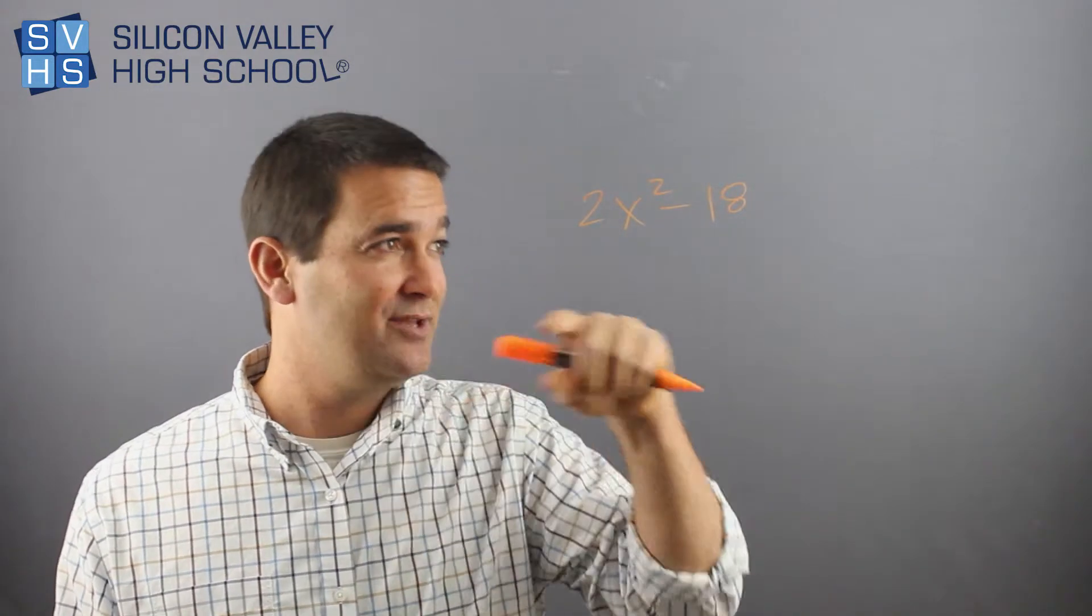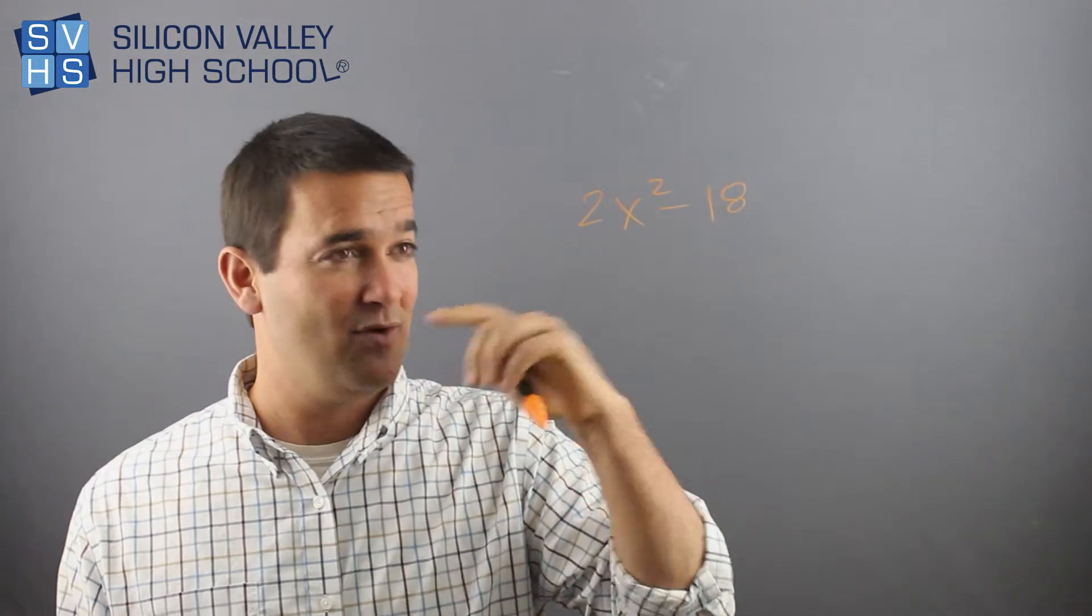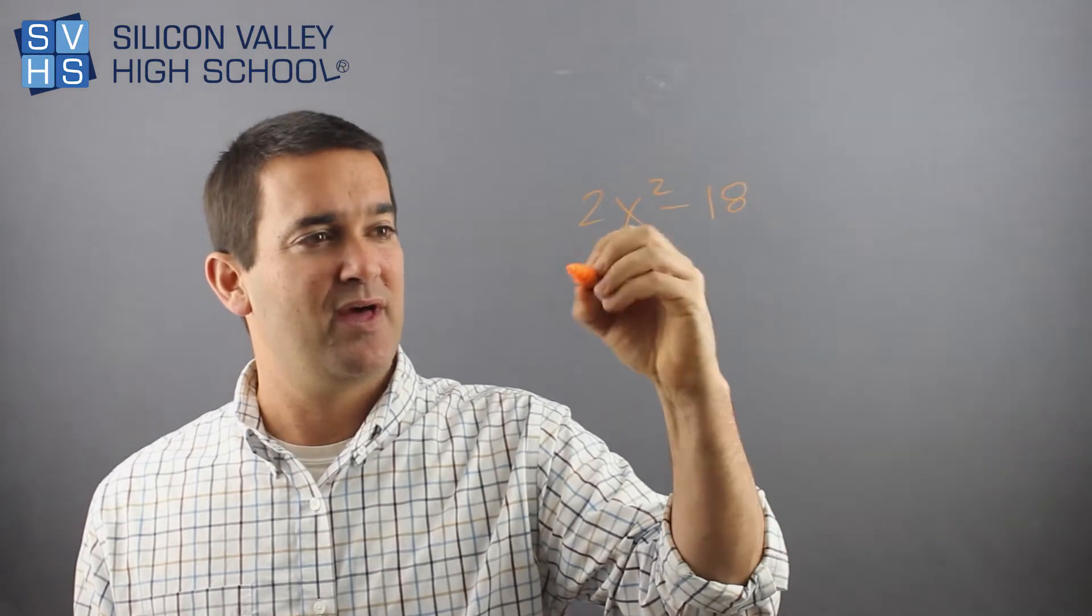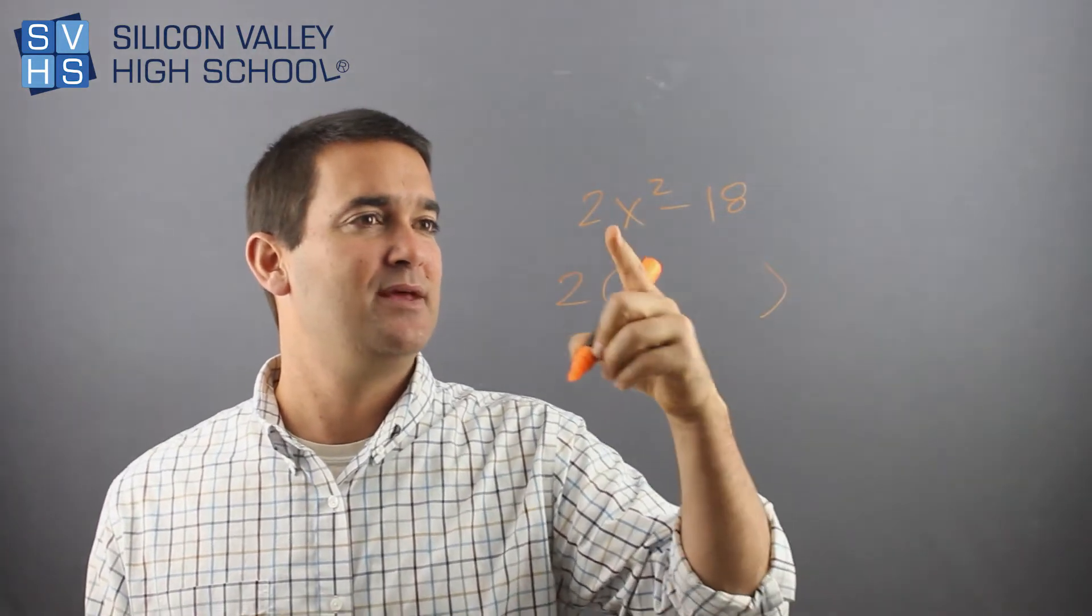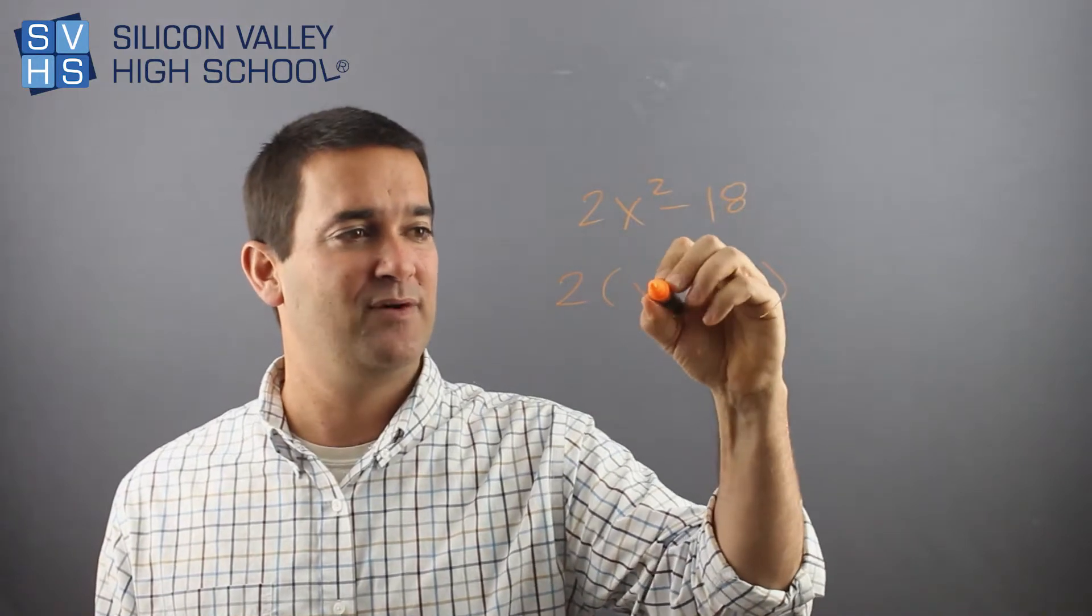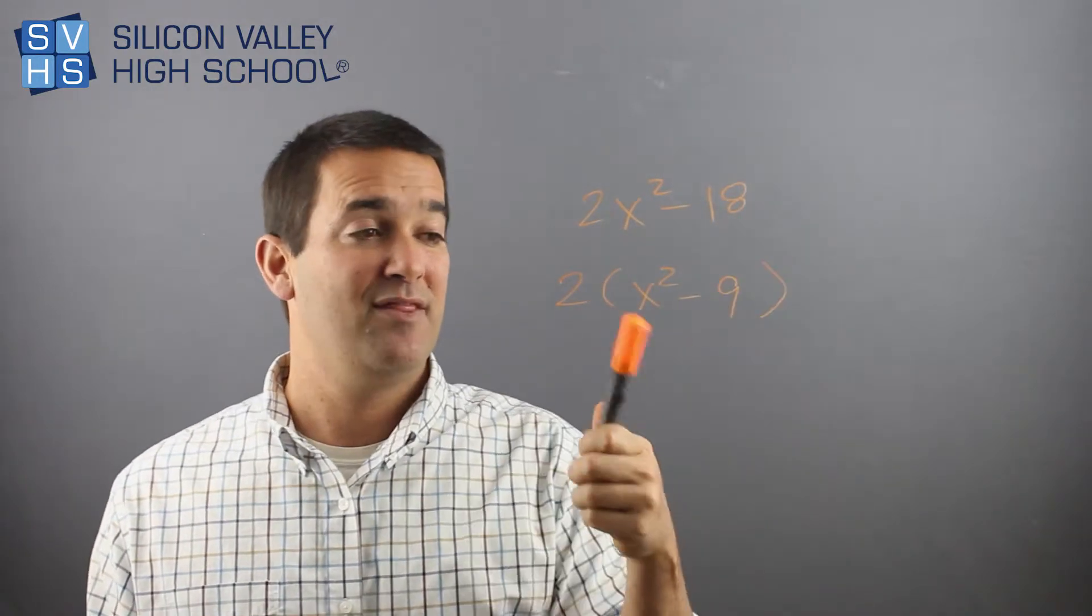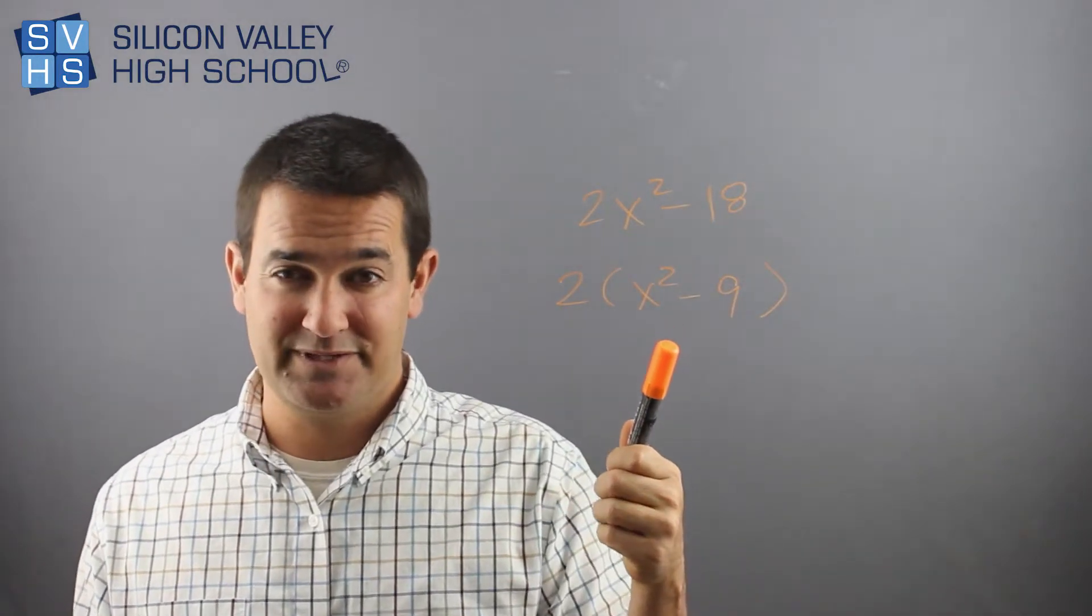Don't forget, the first thing you usually do in factoring is you factor out whatever you can. So I can pull a 2 out of both of these. 2 comes out of him and him. And I'm left with x squared minus 9. That is where my difference of squares comes in.